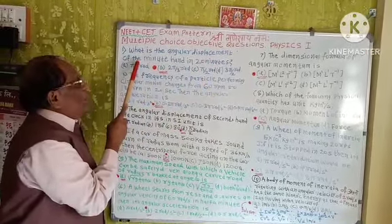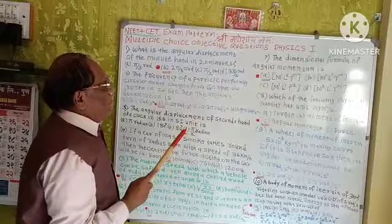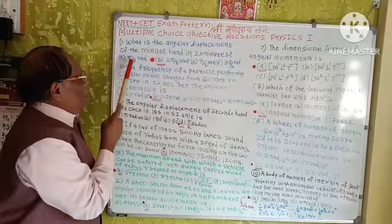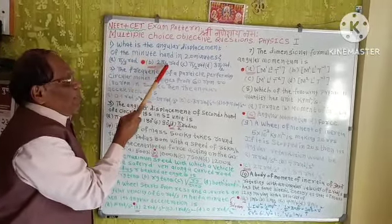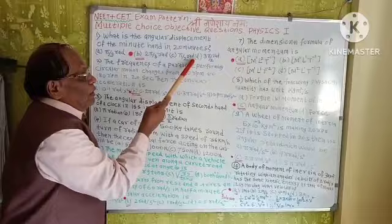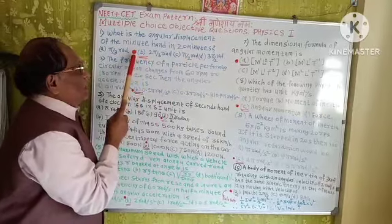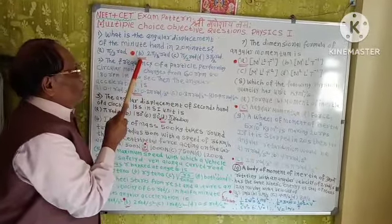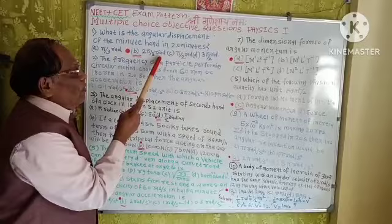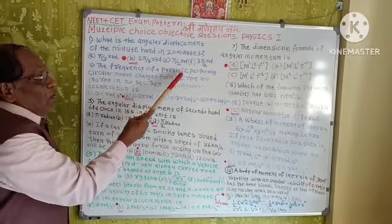Question 1: What is the angular displacement of the minute hand in 20 minutes? The options are: A) pi by 3 radian, B) 2 pi by 3 radian, C) pi by 2 radian, D) 3 pi by 2 radian. The correct option is B, i.e., 2 pi by 3 radian.